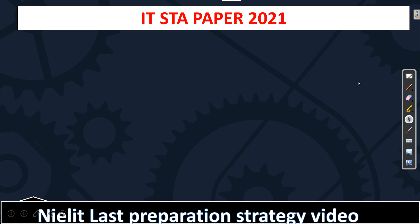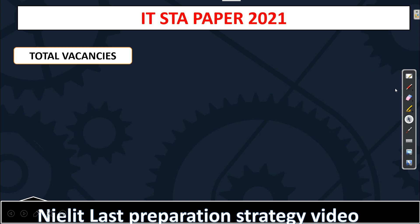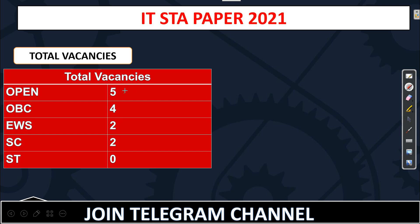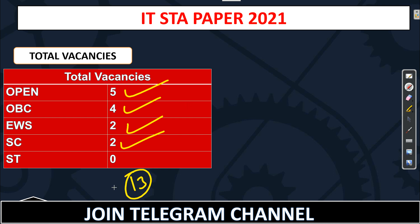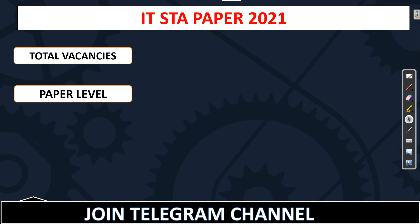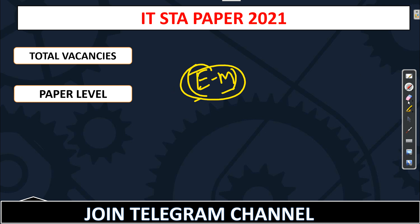Now we will discuss the IT — Information Technology — STA paper. The total vacancies for IT STA are: open 5, OBC 4, EWS 2, and SC 2, so total 13 vacancies allocated for the IT branch. According to students, the IT STA paper is easy to moderate and you can easily score maximum marks. There is no surprise element this time. Definitely anyone can score 85 and above.